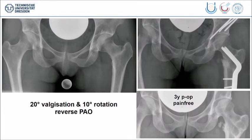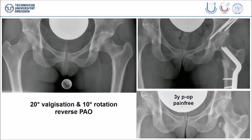So we undertook a valgization osteotomy together with de-rotation. As we did not end up with sufficient internal rotation, we added in a second procedure a reverse periacetabular osteotomy. You can see a nice anatomic situation. Three years after the procedure she is running again and absolutely symptom-free.